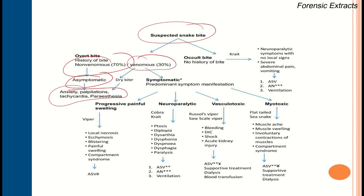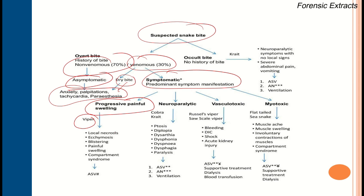If a venomous snake bite is suspected, around 80 percent of bites are dry bites — manage them as non-venomous. But if the patient is symptomatic with progressive painful swelling, suspecting a viper bite, and local necrosis, ecchymosis, blistering, painful swelling, and compartment syndrome are developing, always administer injection of anti-snake venom.